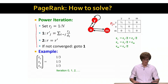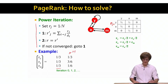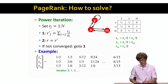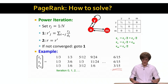For example, we start with r₀, where the components are one-third, one-third, one-third. We multiply it with M, and in the next time step this would be r of 1 — we get the new vector. Then we compute r at time 1 times M, we obtain r at time 2, and again multiply that with M to get r at time 3, and we keep doing this. At the end, r would actually converge to a vector where the a and y nodes would have importance 6 over 15, and y would have importance 3 over 15.